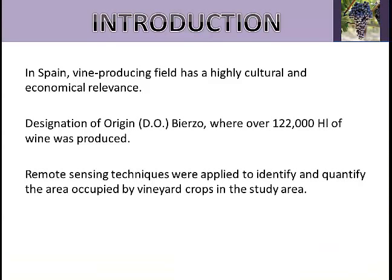During the season 2009 and 2010, in Spain more than 34 million hectoliters of wine were produced. Our study was focused in El Bierzo, where over 122,000 hectoliters of wine was produced per year. Remote sensing techniques were applied to identify and quantify the area occupied by vineyard crops in the study area. Due to the big extension of the study area, it was unthinkable to develop the goals with other techniques.